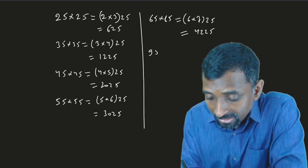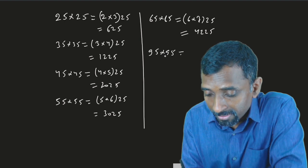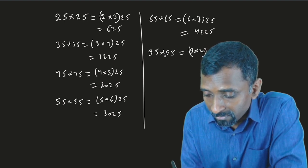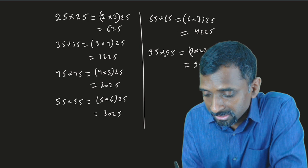If I say 95 multiply 95, then it will be 9 multiply 10, then 25. It is 9025.